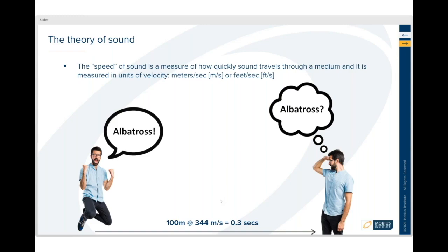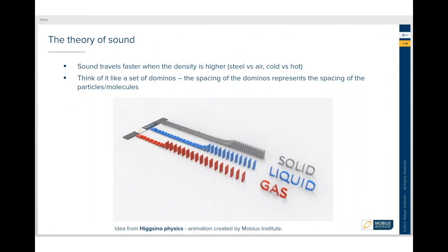Sound travels at different speeds in different materials, and it's all about the density of the materials. One cool way to visualize it - I pinched this idea, you can see the reference down below - is to think of it like dominoes. In something that's more dense, the dominoes are closer together. The molecules inside the material are closer together, so the molecules or dominoes hit each other more quickly, so sound travels faster. In a gas where the molecules are much further apart, it travels more slowly.